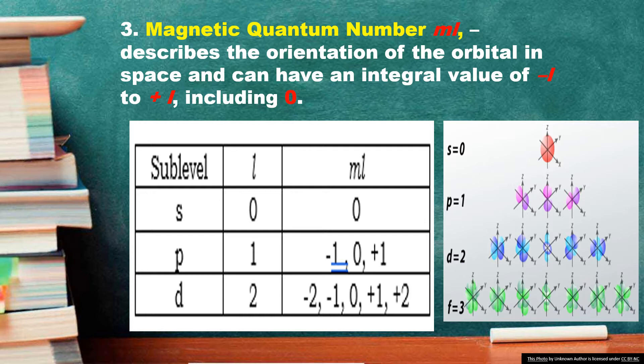If L is 0, ML must be 0. When L is equal to 1, ML equals negative 1, 0, plus 1 — describing the P orbital. If L is equal to 2, the L value of 2 gives us the 5 D orbitals. And if L is equal to 3, it gives the 7 F orbitals.